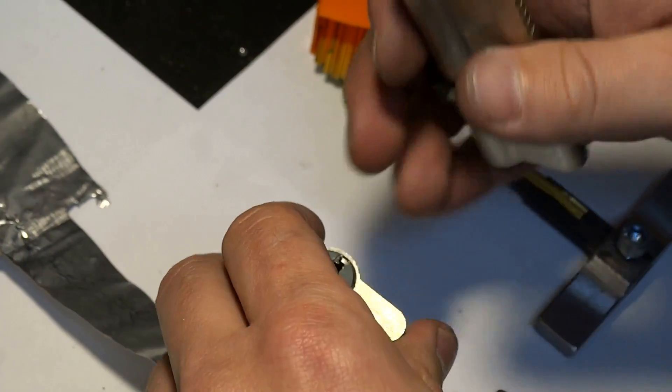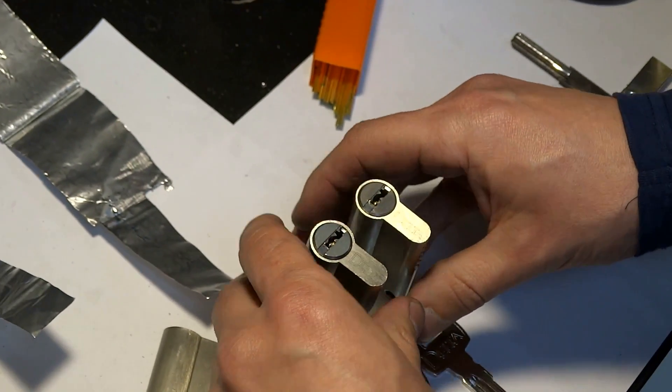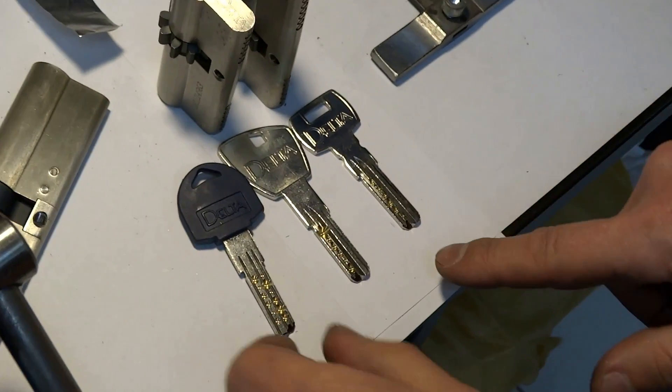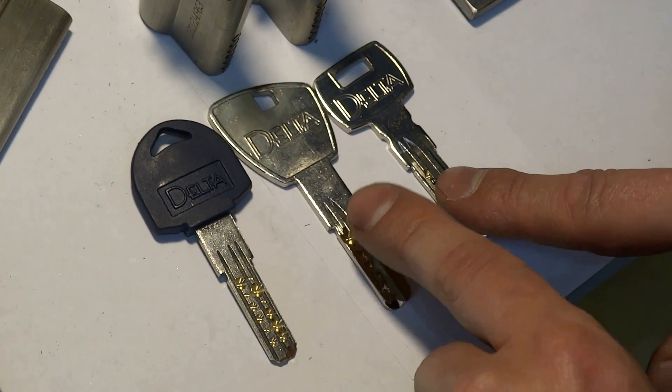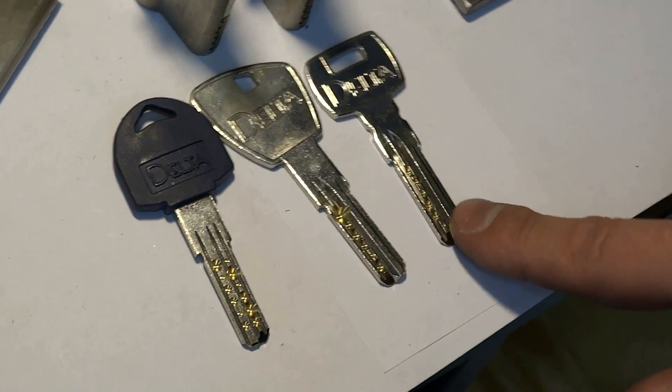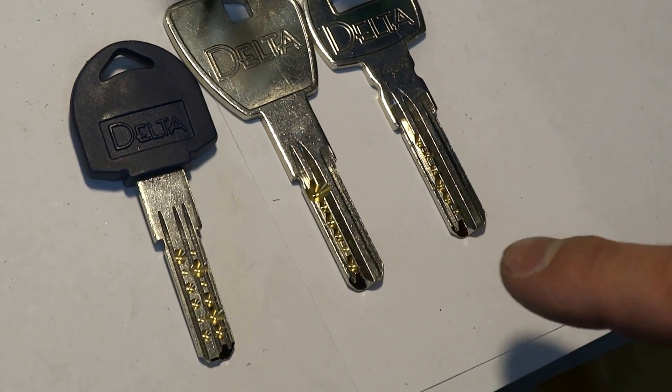There's one double row and two single row cylinders. This is how the keys look. The profiles are similar, but the keys are different.